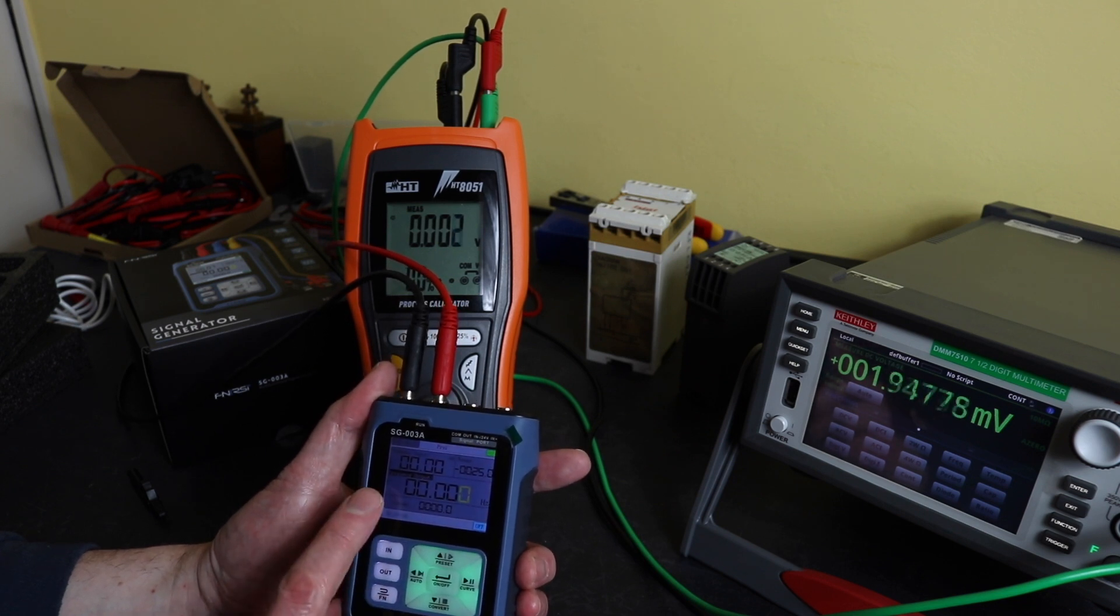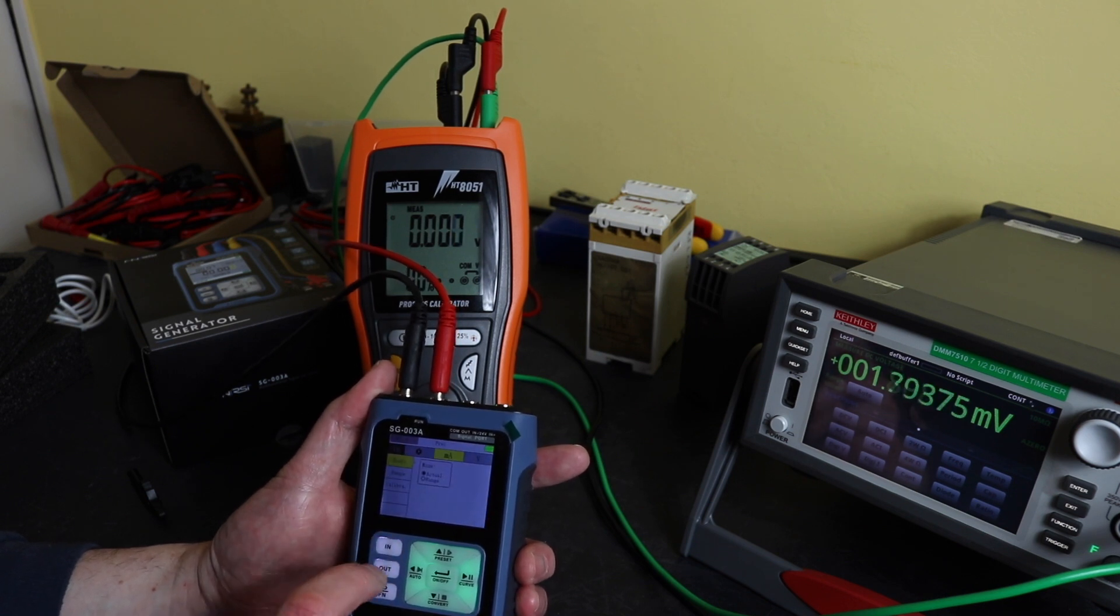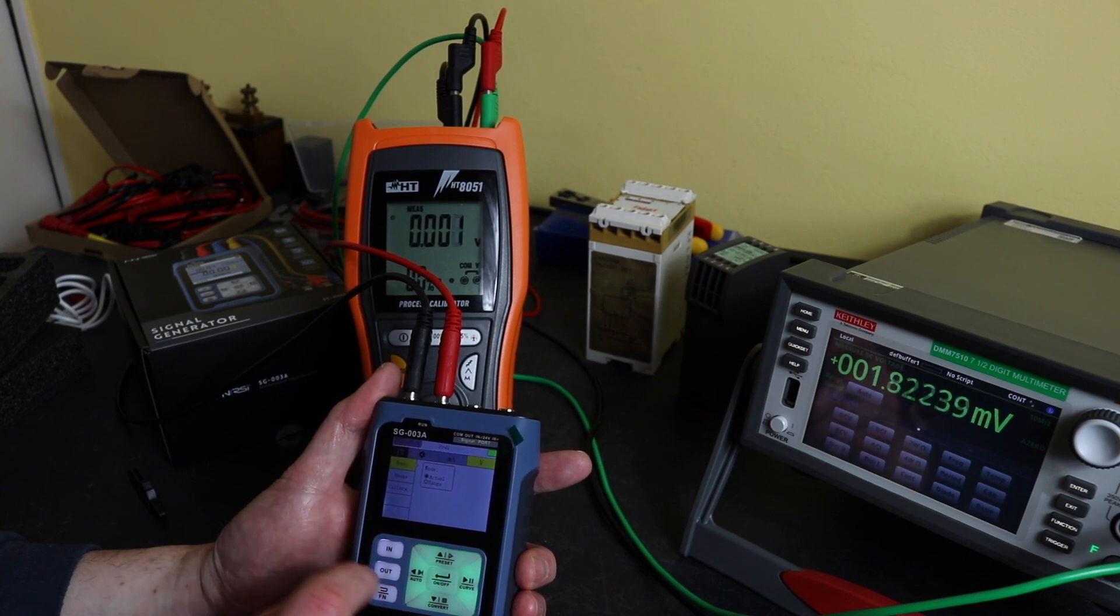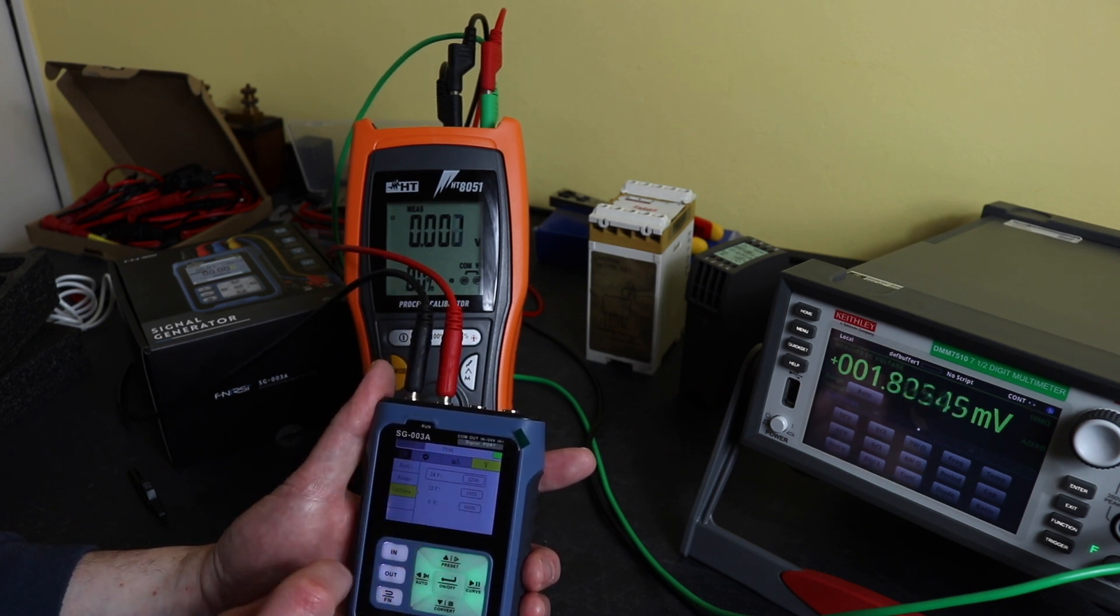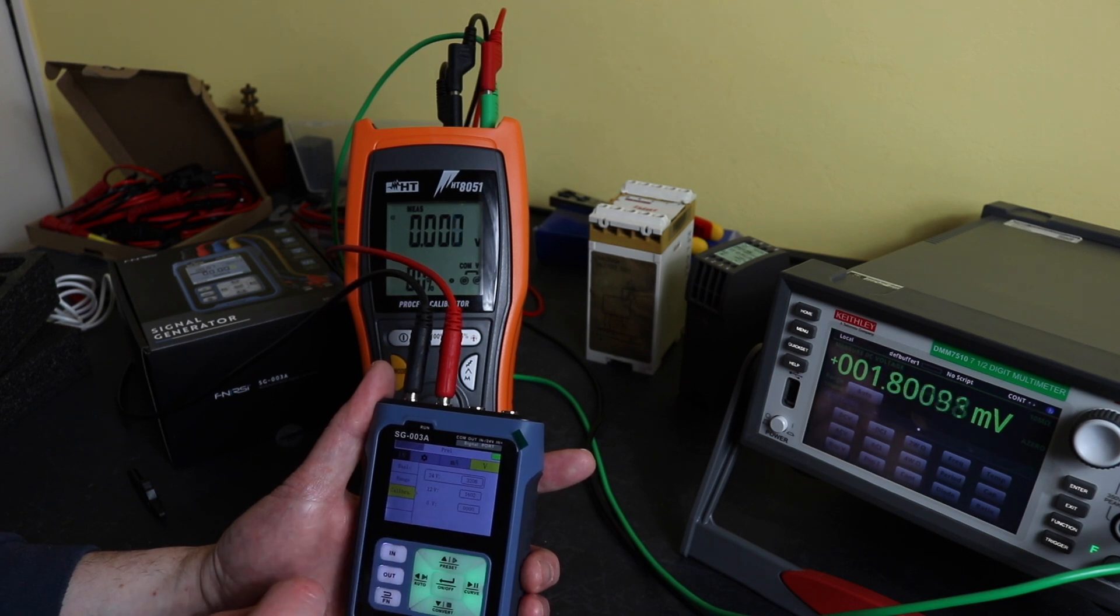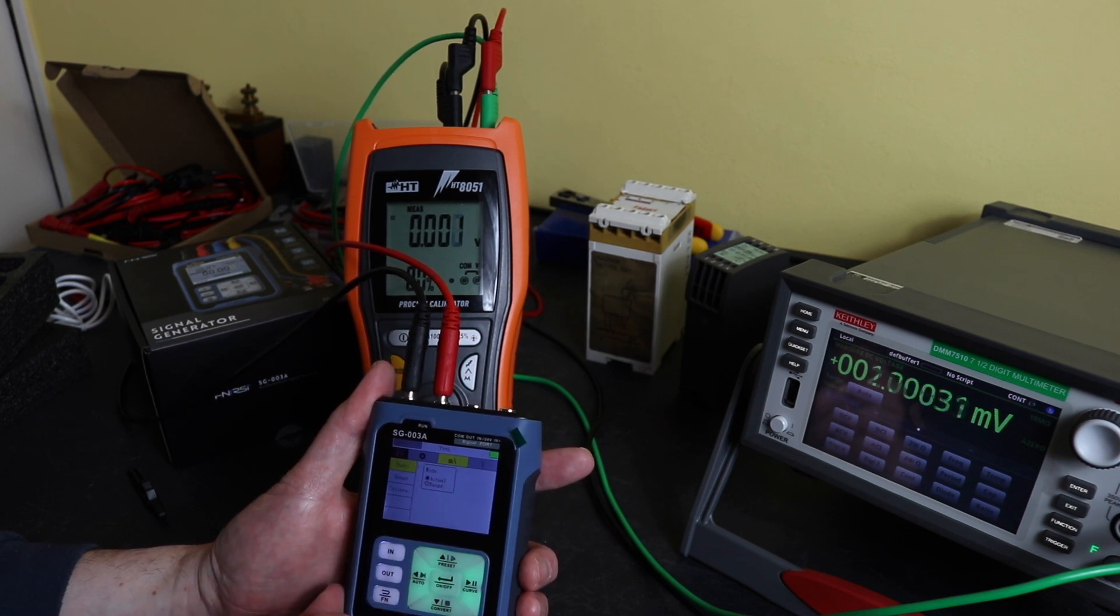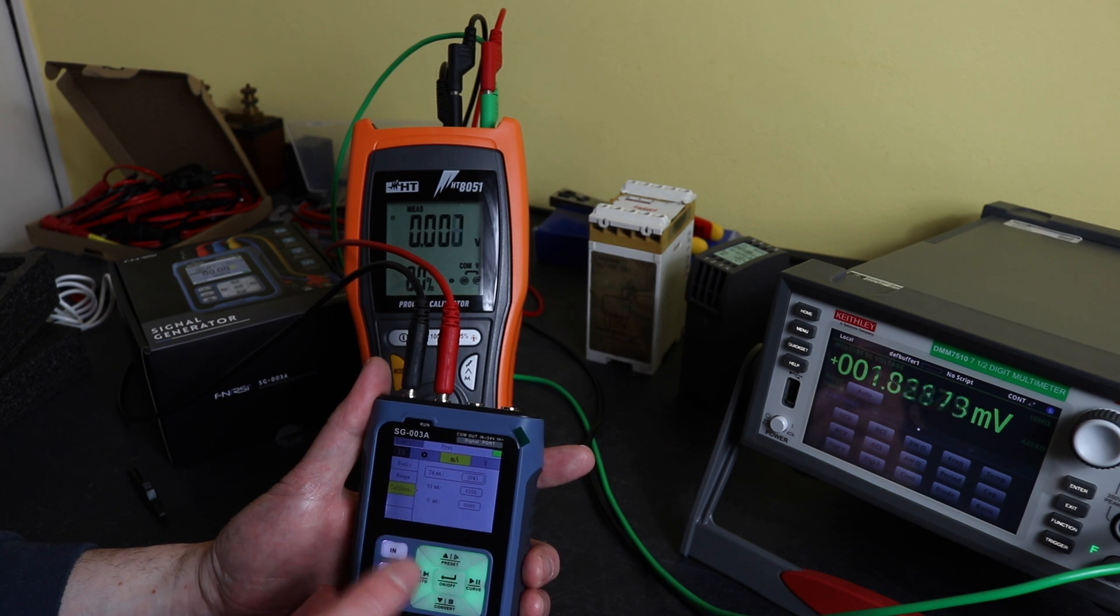For the input functions, you can change between a voltmeter and a milliamp meter. You can change the ranges for both of these. Interestingly enough, it does actually have a calibration function down here as well. So if you've got the right kit, looks like you can carry out calibration. You've got that for voltage and for milliamp as well.